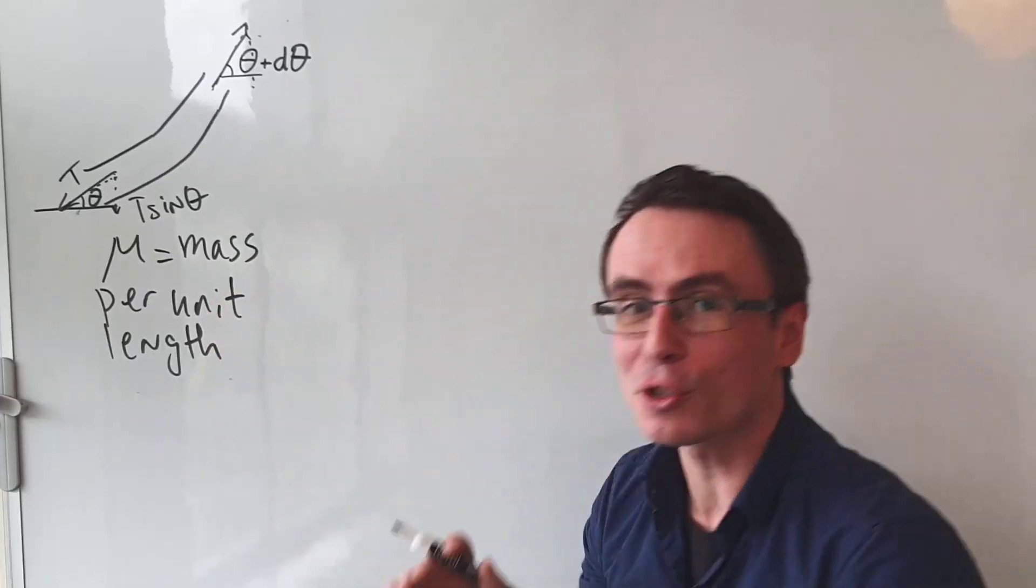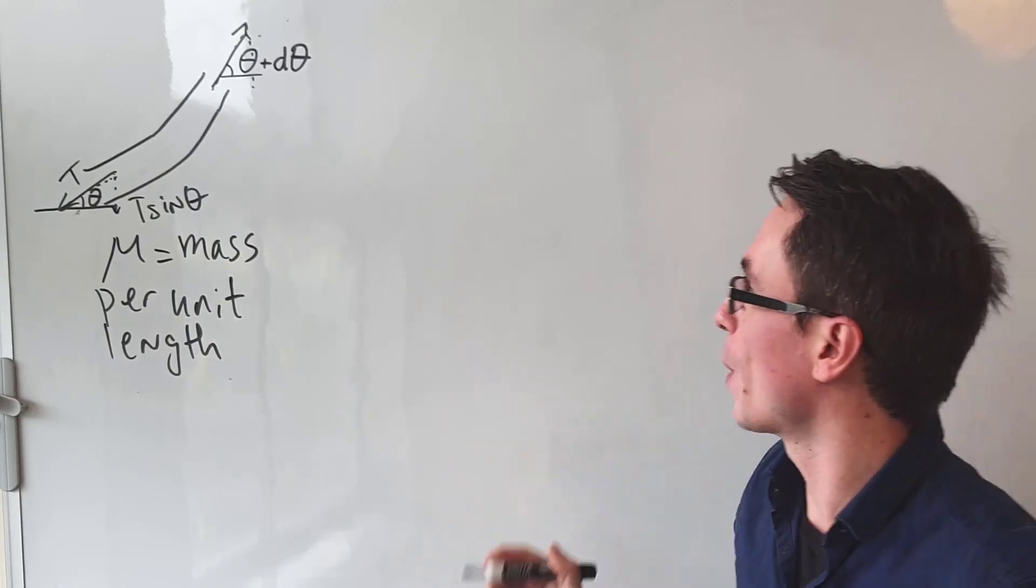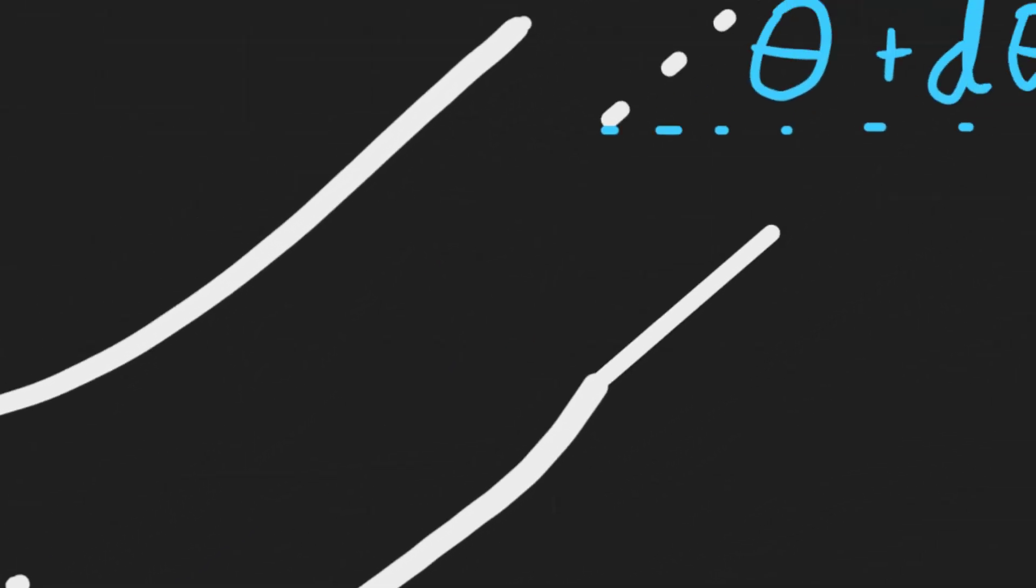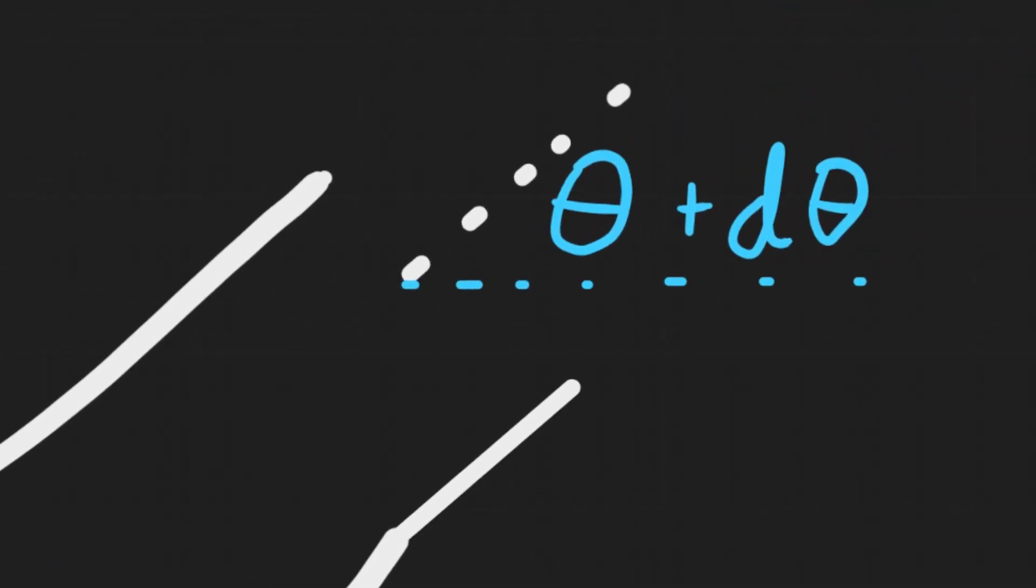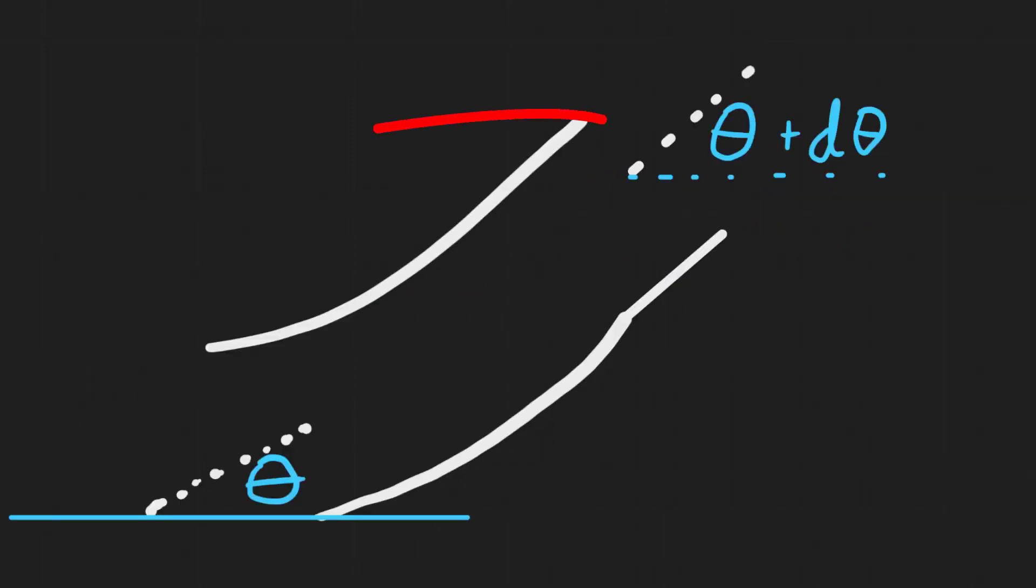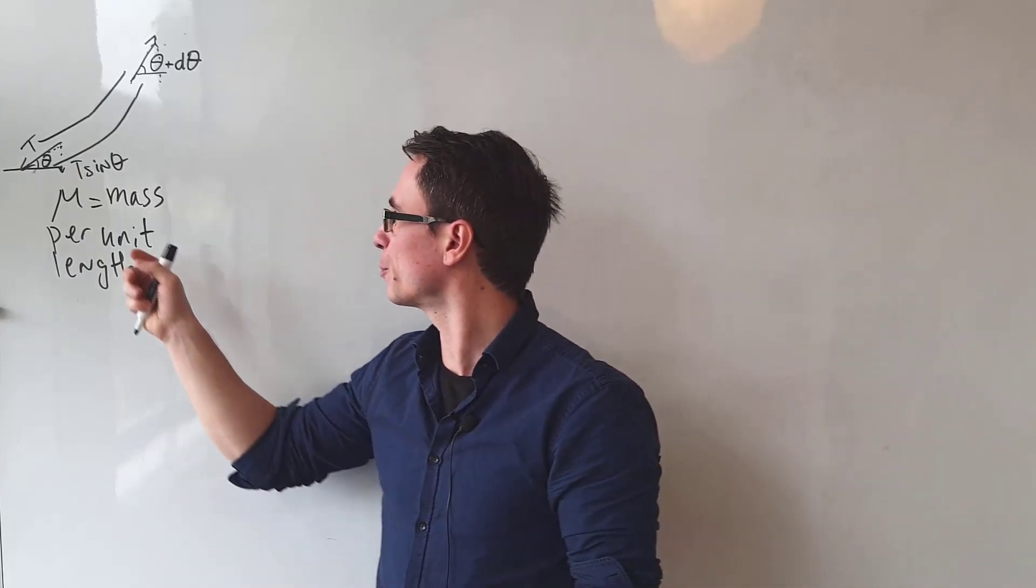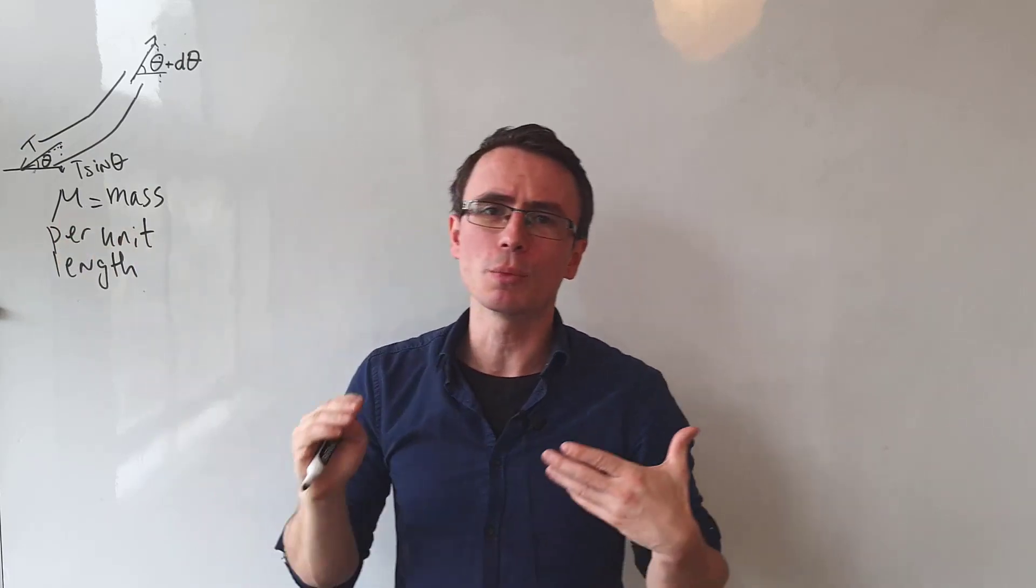We're going to start off with a small segment of the wave. Initially the angle to the horizontal of the string is just theta, but then just a little bit further along the wave, the angle has increased to theta plus a small amount, which we're just going to call d theta. Let's also say that this string is going to have a mass per unit length which is just equal to mu.